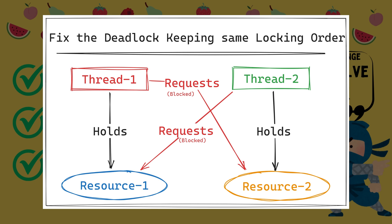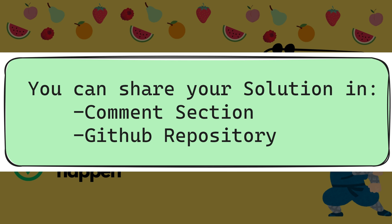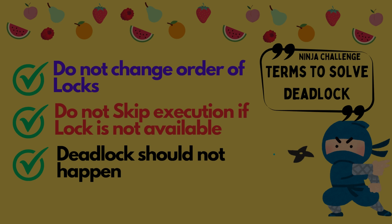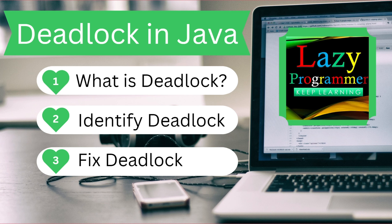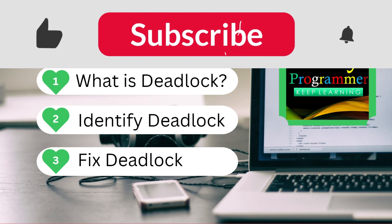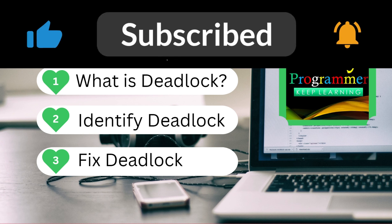Make sure that the execution is completed for both threads and the deadlock situation does not occur. You can share your code in the comment section once you have completed it. In my next video, I will create a short video giving you the solution to this challenge. Thank you so much for watching. If you have any suggestions or queries, let me know in the comments, don't forget to like and share, and keep spreading the knowledge. Happy coding!